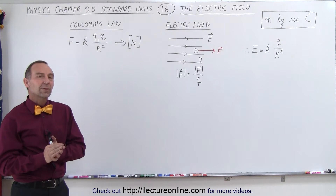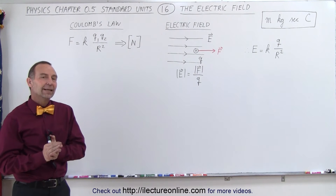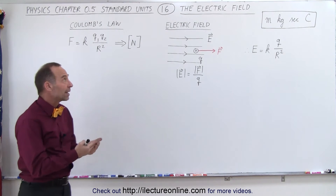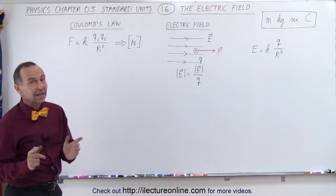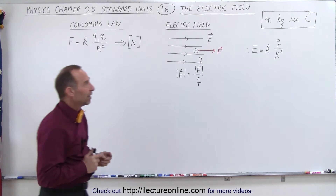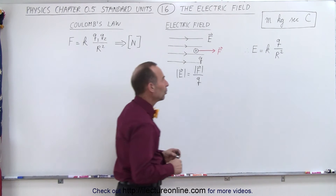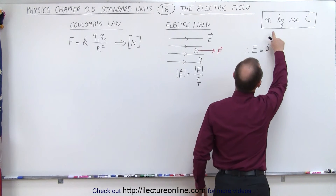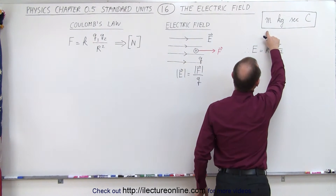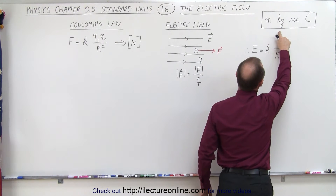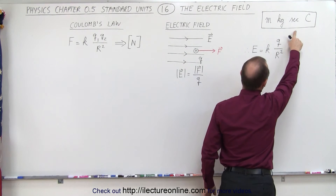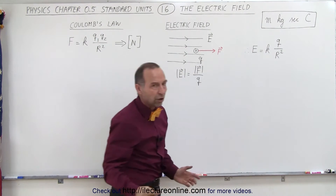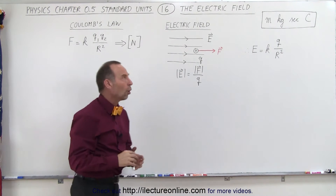Welcome to ElectronLine. Now that we're working with electricity and magnetism, we realize we need four basic units. We still need the three units for mechanics — we have meters, kilograms, and seconds — but we also need the unit for charge, called Coulombs.